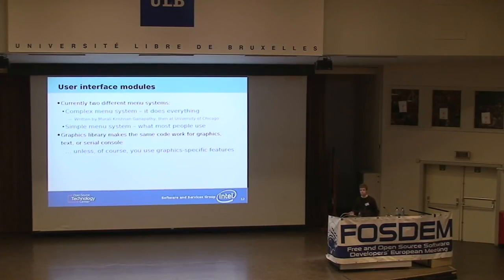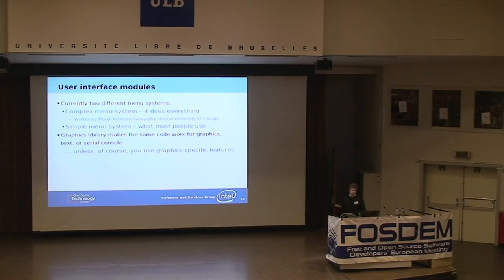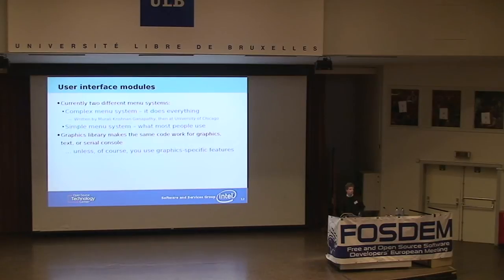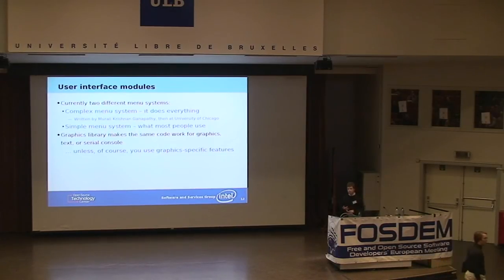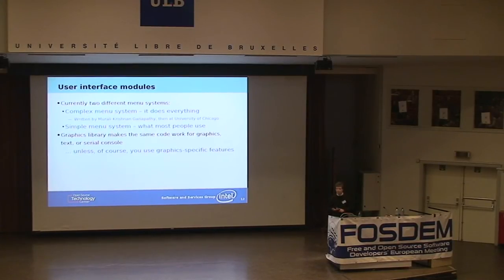The simple menu system came later, after people said the complex menu system was too much work to configure. The simple menu system just takes a simple file or set of files and presents a menu without too much fanciness. There's a graphics library designed to make the same code work for either a graphical console, a text console, or a serial console. The code in the menu system is the same for all three types of consoles. If the menu system had booted and found no usable graphics card, it would just have defaulted back to text mode; if it found a serial console, it would use that — working in parallel with the display console.